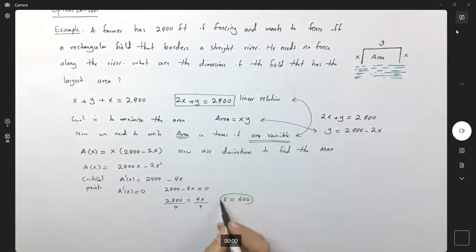x is 600 and then we can easily find the y value as well. Alright, so since y is 2,400 minus 2x, y becomes 2,400 minus 2 times 600 or 2,400 minus 1,500 which is 1,200.